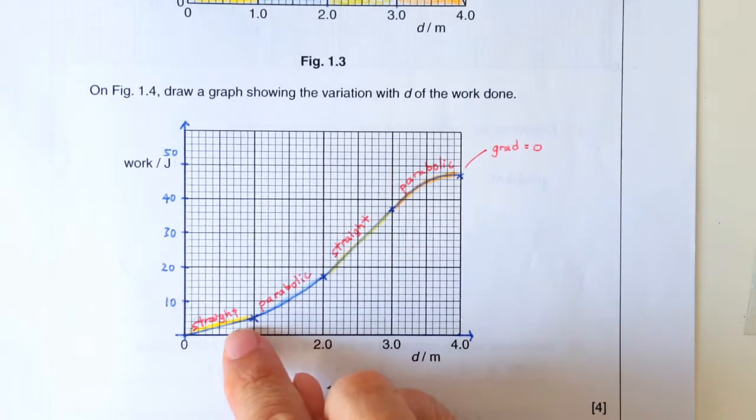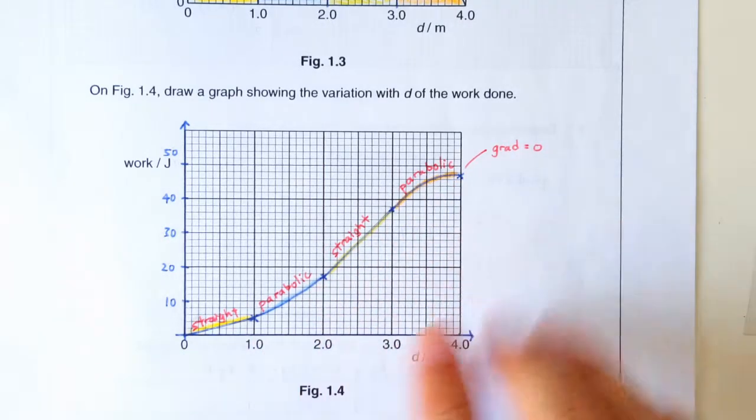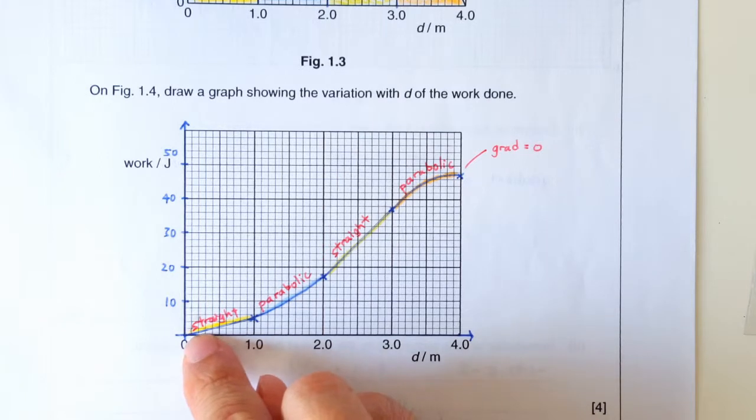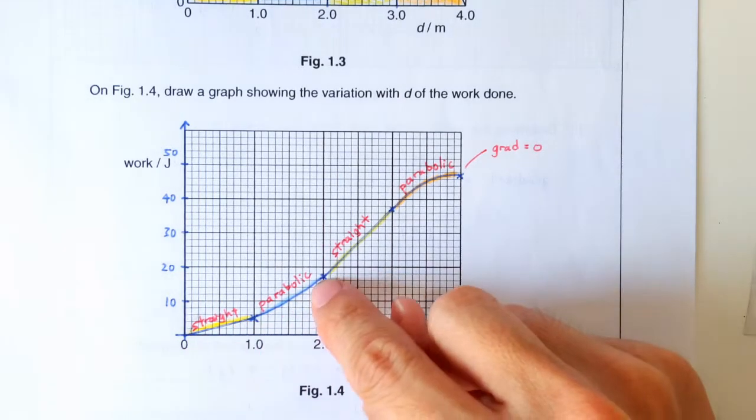One final thing, you should make sure that the line you draw joins up smoothly. There should not be any abrupt change in the gradient. So especially going here to here, for example, is smooth. Here to here is also smooth.